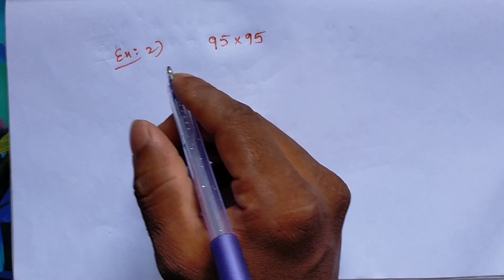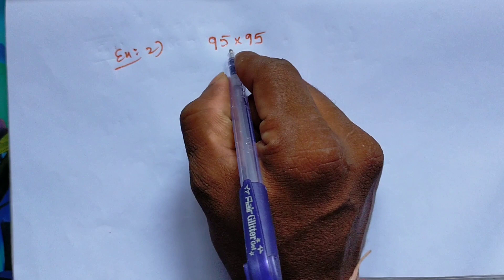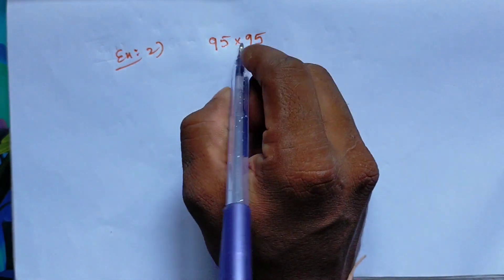Now let's take another example. Example two: 95 x 95. Same numbers, and the last digit is 5.